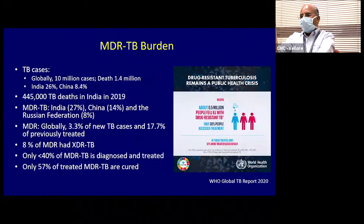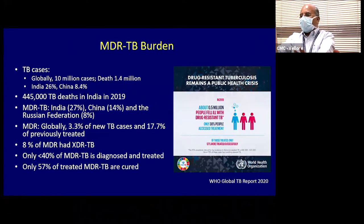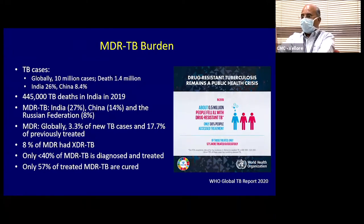TB is one of the major infectious disease burdens in a country like ours. Globally, there are about 10 million cases of TB with 1.4 million deaths in 2019. The WHO global TB report details the current scenario. If you look at the TB burden globally, over a quarter of that burden is in India — much higher than neighboring countries with comparable populations. So we have a long way to go.